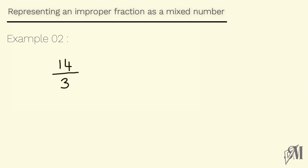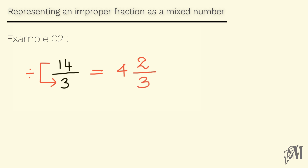Let's look at another example: 14 by 3. Here again, we divide 14 by 3. We get 4 and 2 remains. The denominator will always be 3, so 14 over 3 is equal to 4 and 2 over 3.